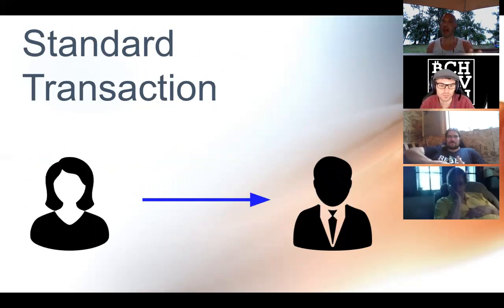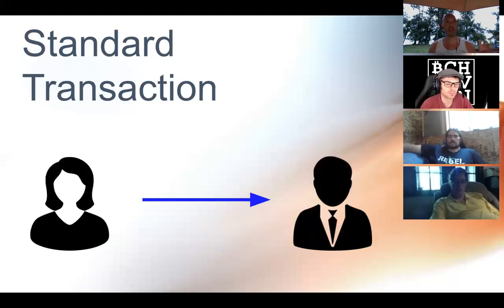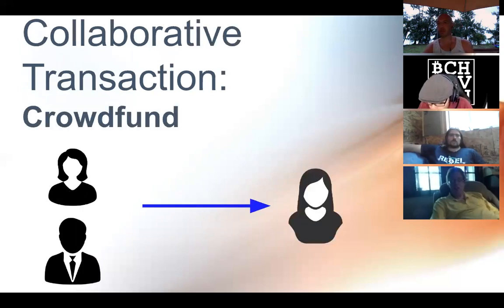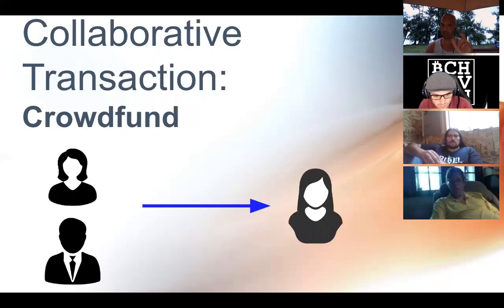Here's your standard transaction: Alice pays Bob. There are three primary collaborative transactions that I find particularly interesting right now, with cool business models behind them. The first is a crowdfund transaction: Alice and Bob work together in a single transaction so that they can pay Carol. That's the crowdfunding.